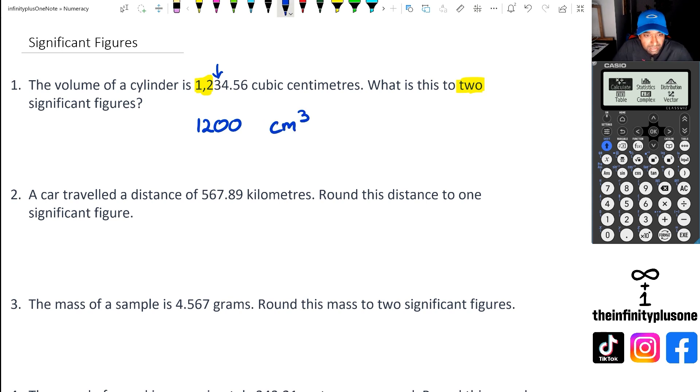You've got second question, which is 567.89 kilometers. And we're rounding this distance to one significant figure. So because it's to one significant figure, we are only looking at the first number, which is five. And if we look at the number straight after it, that's going to be six, which means we need to round this number up to 600 kilometers.